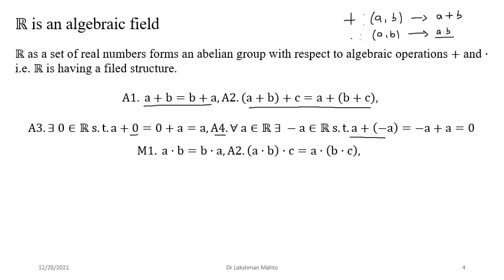Likewise, real numbers also have four properties with respect to multiplication. The first is commutativity or Abelian nature: for any two real numbers, a · b = b · a — order doesn't matter. Whether you take a first or b first, the result is the same. These are by default satisfied by real numbers; you don't need to prove them. The second property with respect to multiplication is: if you take any three real numbers, since you can only proceed two at a time, (a · b) · c = a · (b · c).